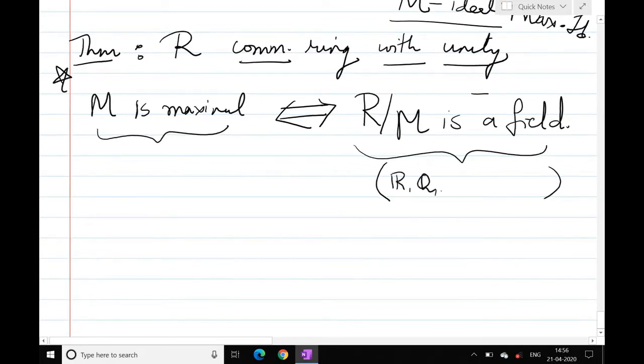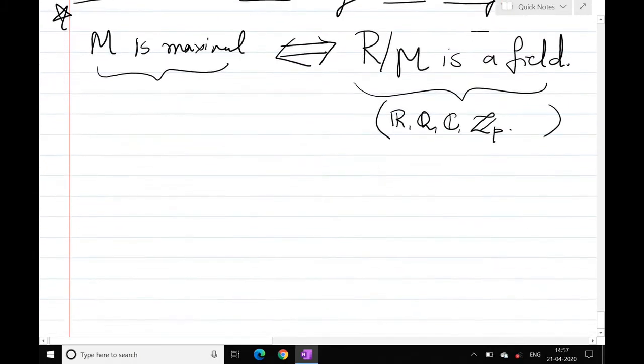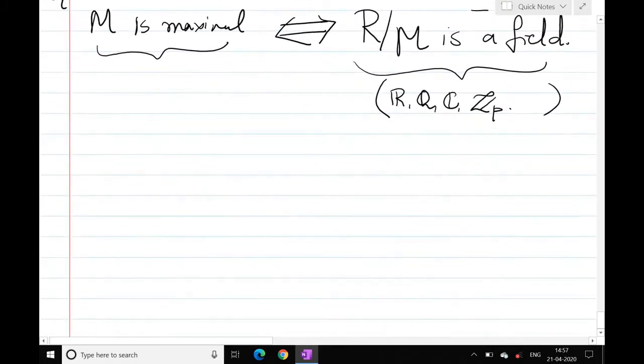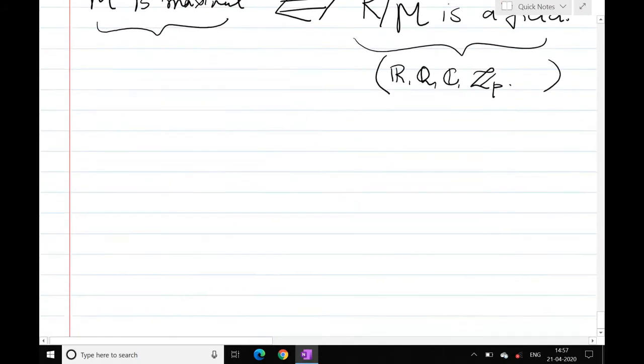And the field is R, Q, C, Zp, these are the known fields to us. At the same time, there are some more, not useful right now.